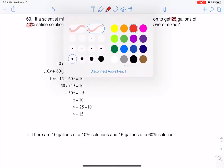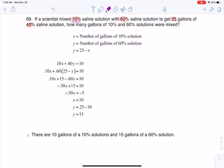If we just take a step back, we have not so much saline, a ton of saline, and we get medium saline. So how much of each did we need to get this 40% saline solution?